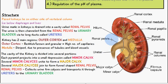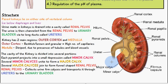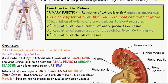We can divide the kidney into various cavities. Each pyramid projects into a small depression called a minor calyx. These minor calyces form major calyces, which together form a funnel known as the renal pelvis. The renal pelvis collects the urine — the modified filtrate of plasma — and transports it to the urinary bladder via the ureter.